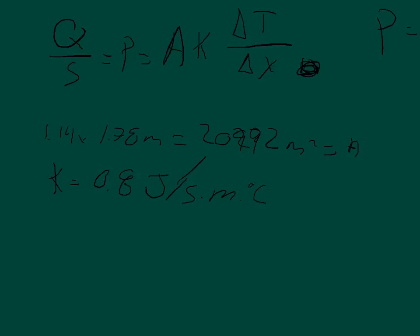It also gives us the indoor and outdoor temperatures. T final being the indoor temperature of 26 degrees Celsius and T initial being the outdoor temperature of 0 degrees Celsius. And delta x, the thickness of the glass, is 0.62 centimeters, which equals 0.0062 meters.